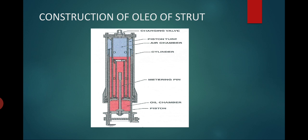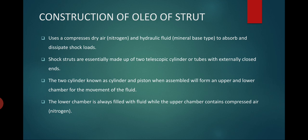The construction of the oleo strut includes a piston-cylinder arrangement, piston tube, piston chamber, cylinder, and metering pin. The metering pin is situated at the center of the orifice to control the flow of fluid. It uses compressed dry air and hydraulic fluid to absorb and dissipate shock loads. The dry air used is nitrogen, because nitrogen is less likely to cause corrosion and does not contain moisture, unlike gases such as oxygen.